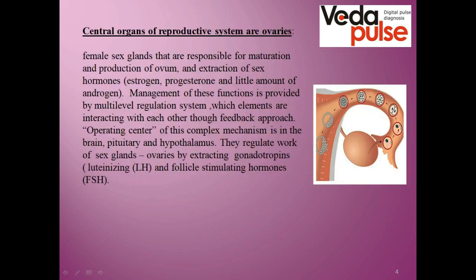The ovary is the central organ of the reproductive system and is also a gland. On the illustration you can see the process of ovum release into the uterus through fallopian tubes. The ovary produces estrogen and progesterone hormones, but the female organism is very complicated and hormone production doesn't always happen at the same time. The regulation of these hormones is determined by a multi-level system with the operating center located in a completely different location.